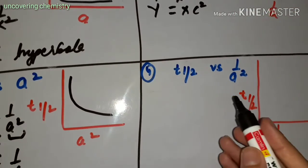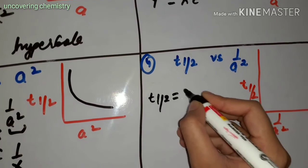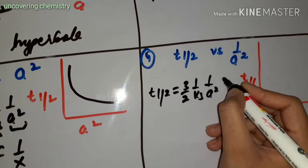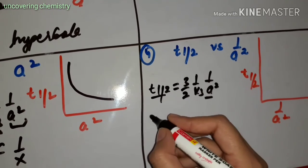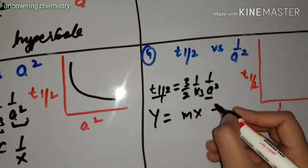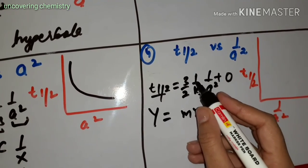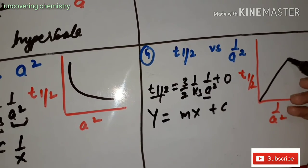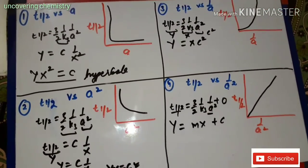The next graph is T-half versus 1 upon A squared. From the equation T-half equals (3/2) times (1 upon K3) times (1 upon A squared), substituting 1/A² as X gives a straight-line equation Y equals MX plus 0. The slope is (3/2) times (1 upon K3), and the graph is a straight line passing through the origin with positive slope. This completes the graphical representation for the third order reaction.